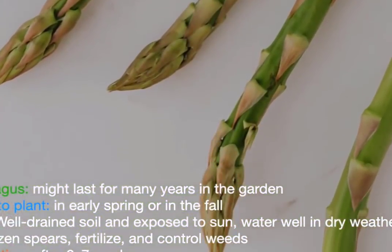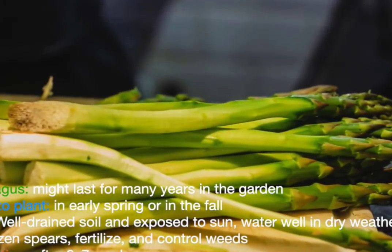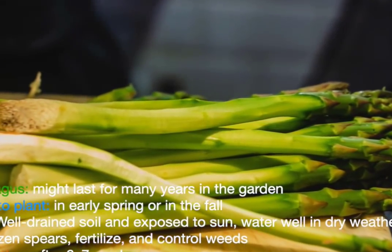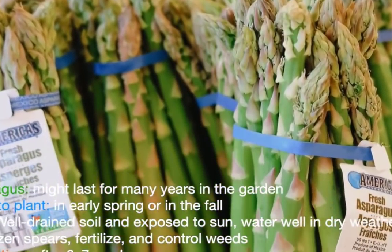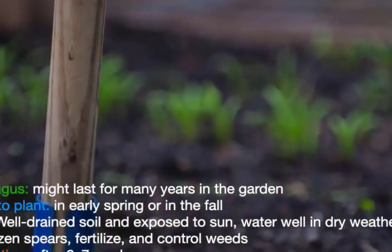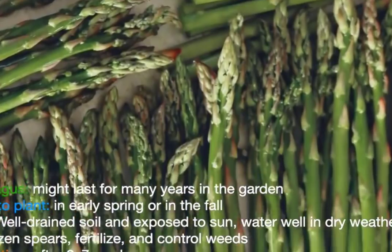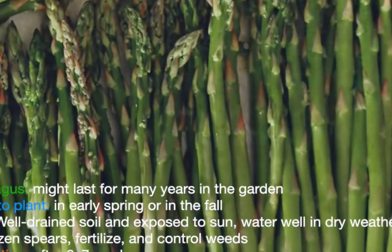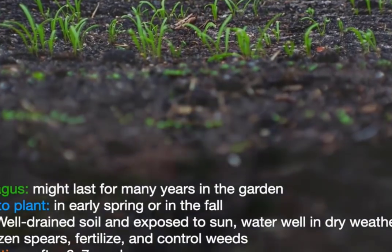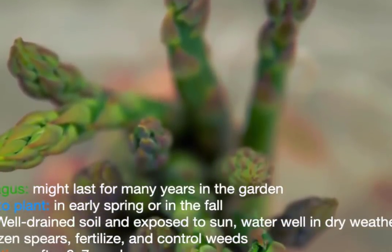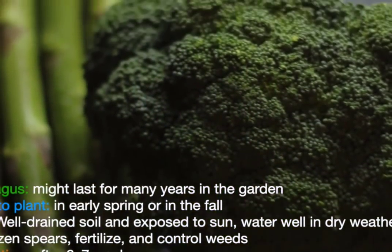Asparagus can be planted in early spring or in the fall. Purchase fresh plant crowns from a local garden center or plant seedling transplants. For good care, well-drained soil and a sunny location are necessary. Soak the area well in very dry weather. Cut and destroy frozen spears. Fertilize in the early spring and control weeds with mulching or hoeing. Harvest after the first year, usually six to seven weeks in a mature planting.